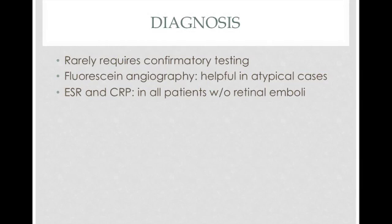The diagnosis usually does not require confirmatory evidence. If you have someone whose physical exam findings are consistent with central retinal artery occlusion, you go ahead and make the diagnosis. In atypical cases, you could do fluorescein angiography. You would also want to do an ESR and CRP in all patients without a retinal emboli just to make sure you can rule out giant cell arteritis.